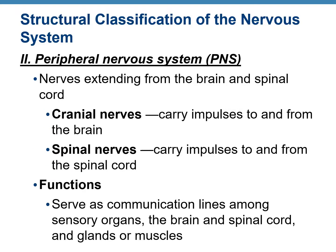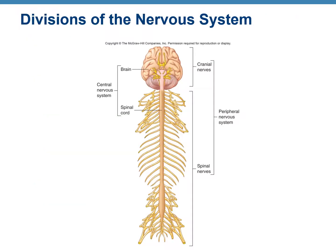The PNS, or peripheral nervous system, includes the nerves coming out from the brain and the spinal cord. There are two types: cranial nerves coming out from the brain, and spinal nerves coming out from the spinal cord. The function of the PNS is to serve as communication lines — carrying information from the sensory organs to the brain or spinal cord, and then back from the brain or spinal cord to the glands or muscles. This figure summarizes the divisions of the nervous system.